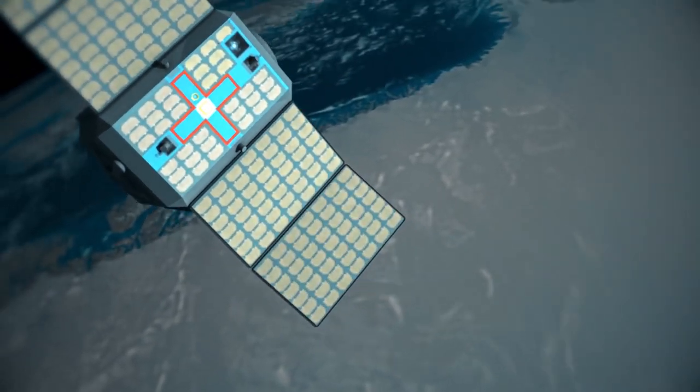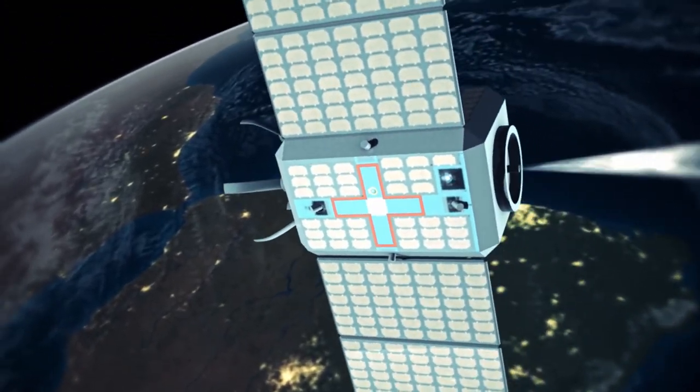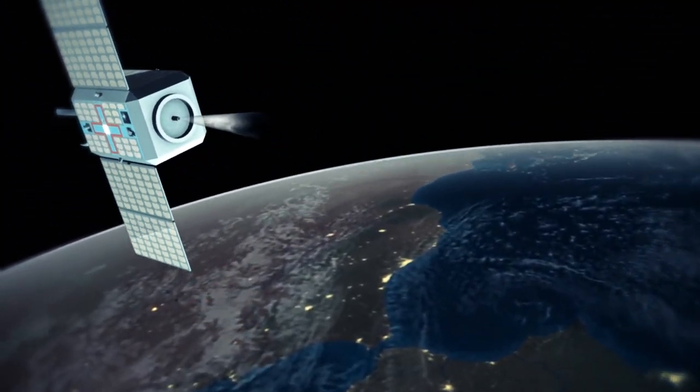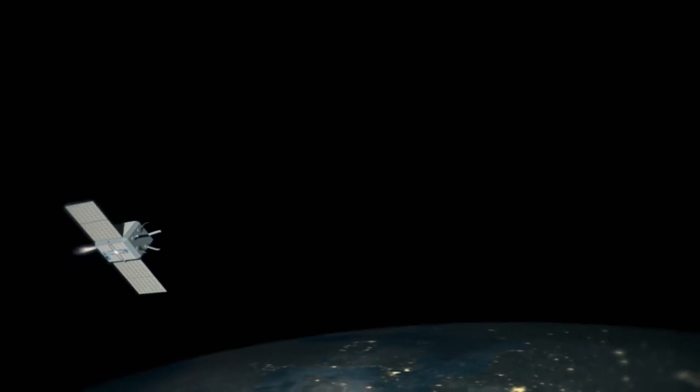But it's a messy business. Elon Musk's Starlink alone hopes to eventually have as many as 42,000 satellites deployed in space. And once they get broken or collide with other objects, these objects become waste.